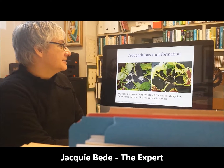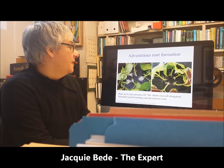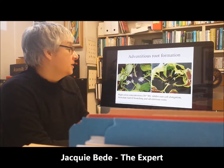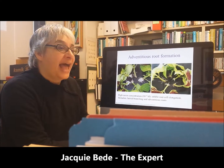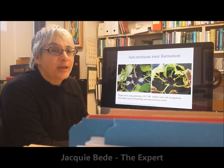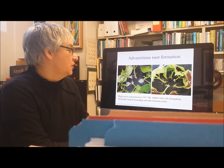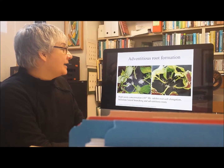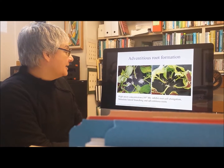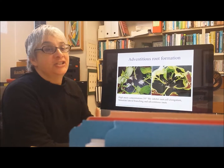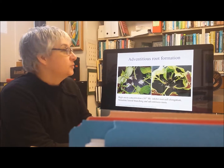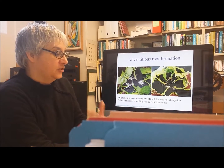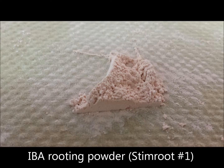Auxins are very interesting with root development because at a really high concentration, it actually inhibits the elongation of the primary root, but it stimulates lateral branching and adventitious roots, and that's how you use it in terms of rooting powder.